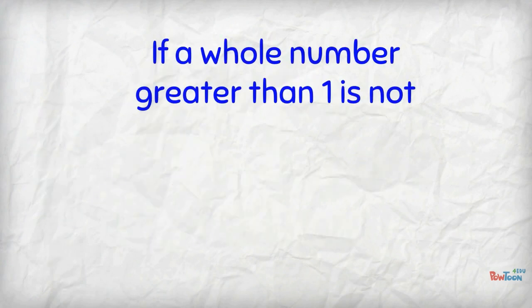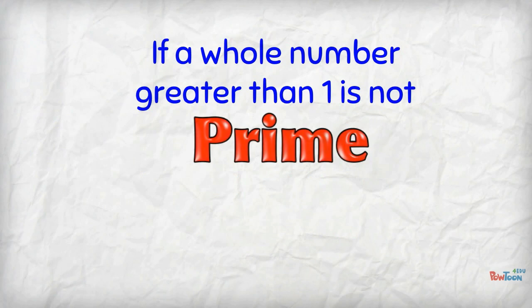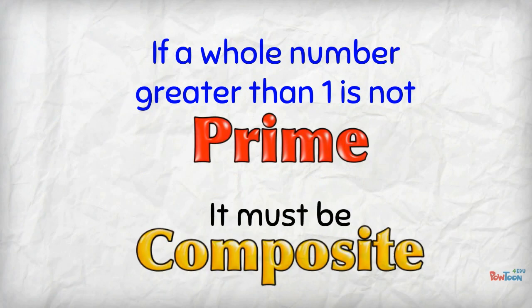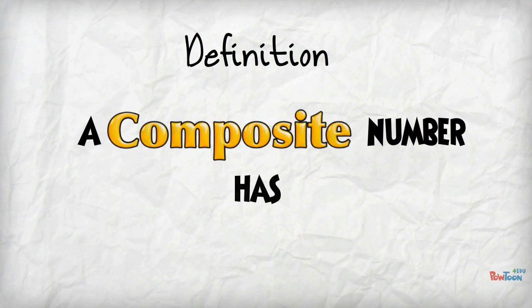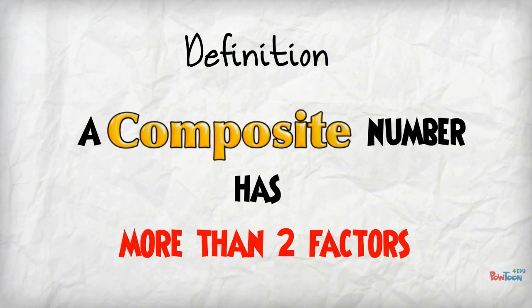If a whole number greater than 1 is not prime, then it must be composite. Let's give it a definition. A composite number has more than 2 factors, like we just saw with our example of 8.